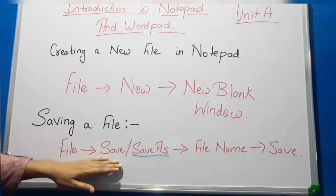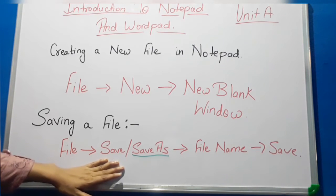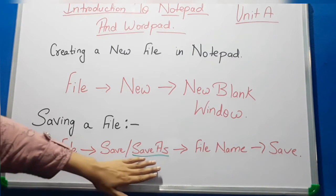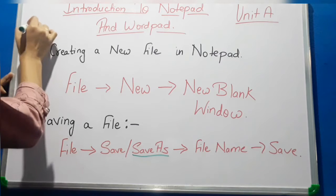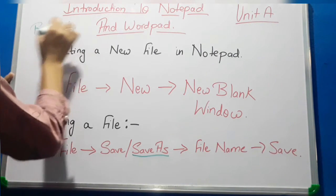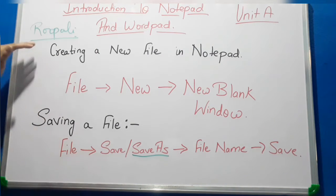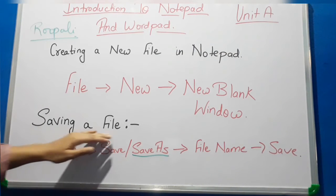You may be wondering why the Save option is there. Save is used to make changes and then save the file again. Suppose you have made a file named Rupali — when you first saved that new file, you used the Save As option from the File menu.